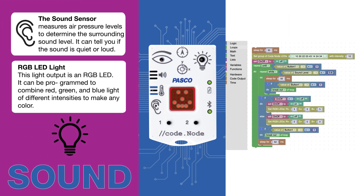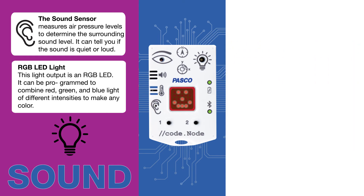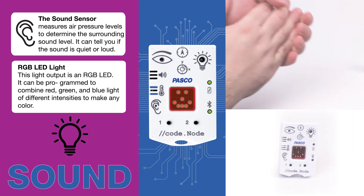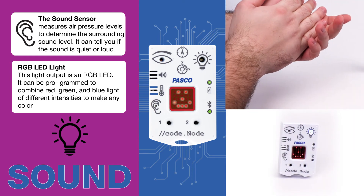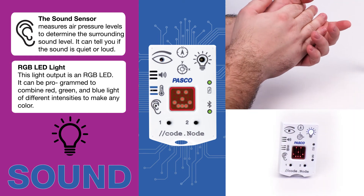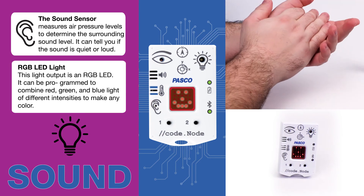Using the sound sensor as the input, when a loud sound is heard, the output light will turn on or off. We have just made a clap-activated light.